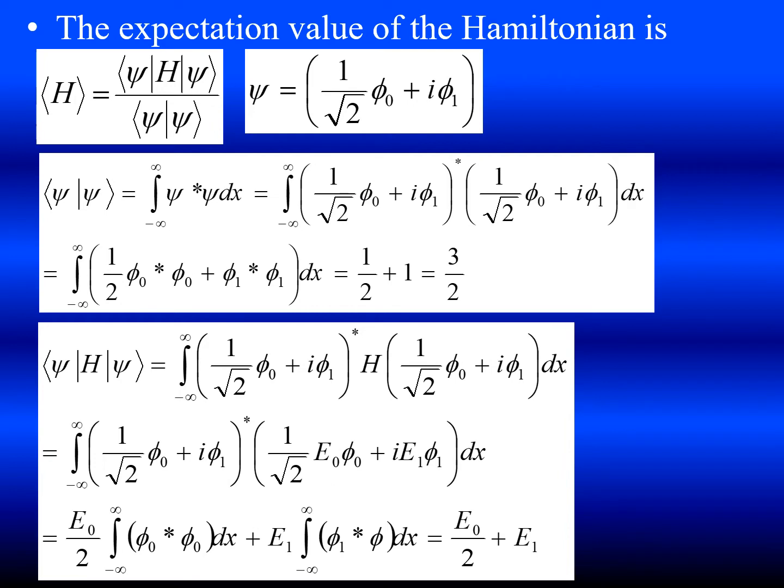The expectation value of the Hamiltonian is the expectation divided by the probability of finding the particle. So first you find the probability.